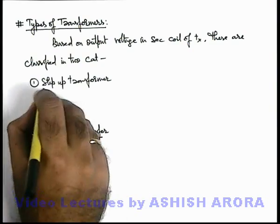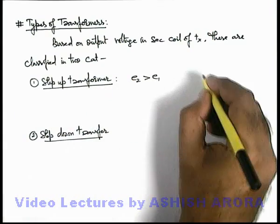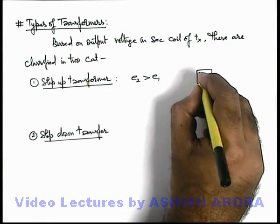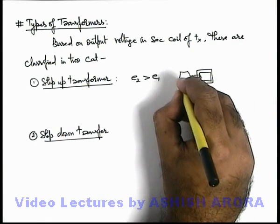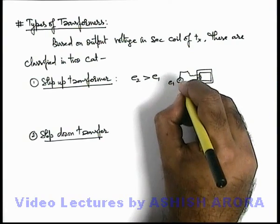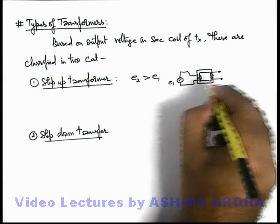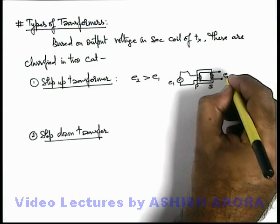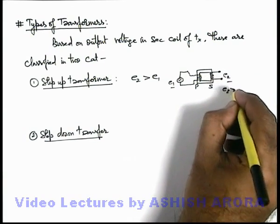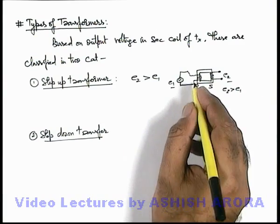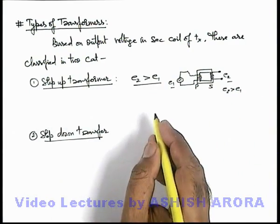A step-up transformer is one where e2 is more than e1. For a given transformer, the voltage applied on the primary coil is e1, and in the output terminal the voltage available at the secondary coil is e2. When e2 is more than e1 — that is, the output voltage is more than the input voltage — such a transformer we call a step-up transformer.